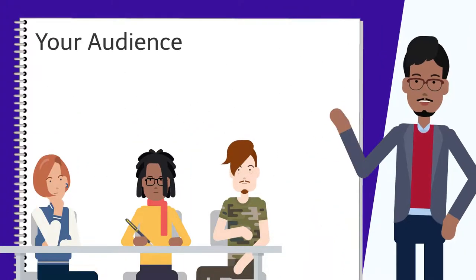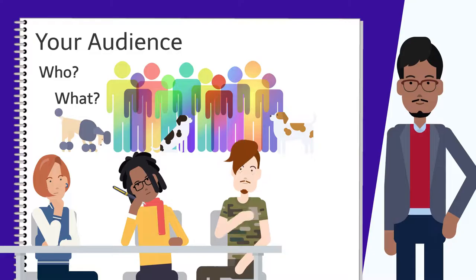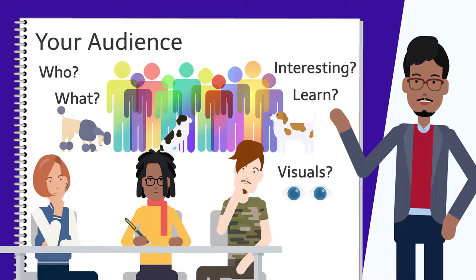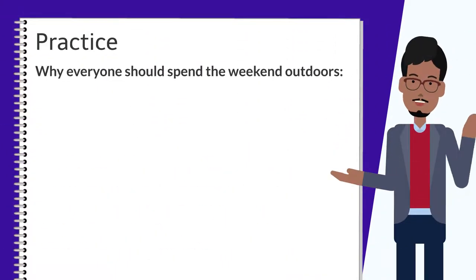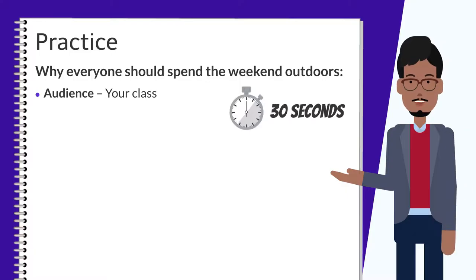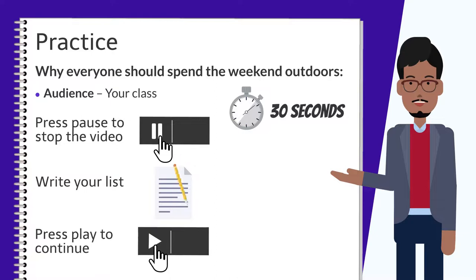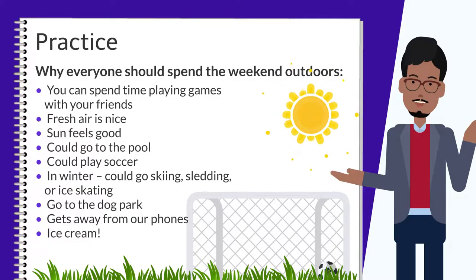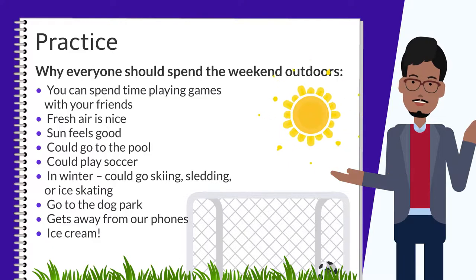If you're still stuck and don't know how to narrow down your topic, consider your audience. Who are they and what do they know about your topic? What would they find interesting? What could they learn? What kind of visuals would they appreciate? And what do you want them to walk away from your speech knowing? For example, if you're giving a speech on why everyone should spend the weekend outdoors and your audience is your class, take 30 seconds to write down what they might like to know. This is our list — it's okay if yours isn't the same, since all audiences are different. What's important is considering their point of view as you write, which makes your speech stronger.